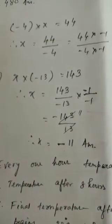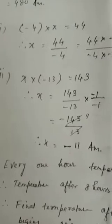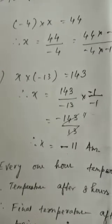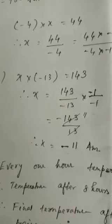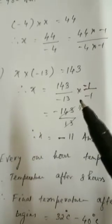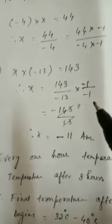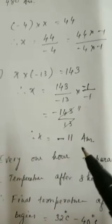One more question — number 3 here, question number 4: let the unknown number be X again. X into minus 13 is equal to 143. You have to find out X, therefore X is equal to 143 divided by minus 13. Again, multiply both numerator and denominator by minus 1, so you get minus 143 by 13. Cancelling it, you get X is equal to minus 11. That is your answer.